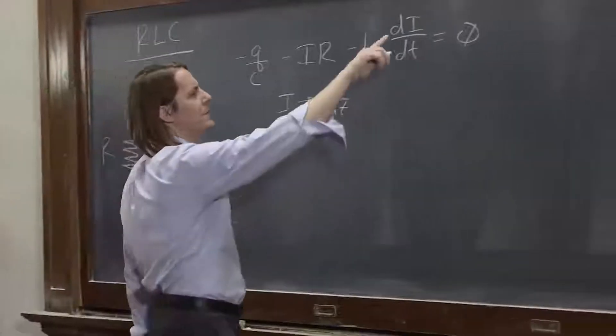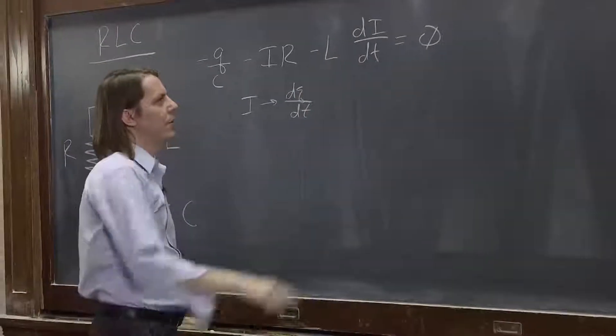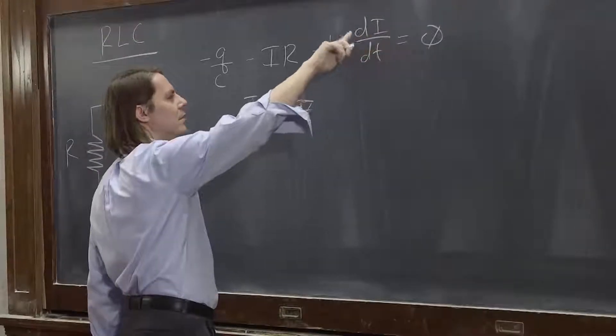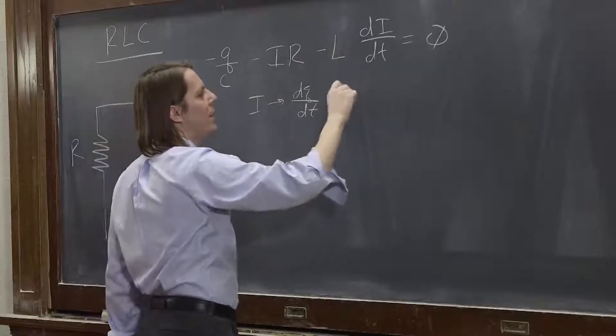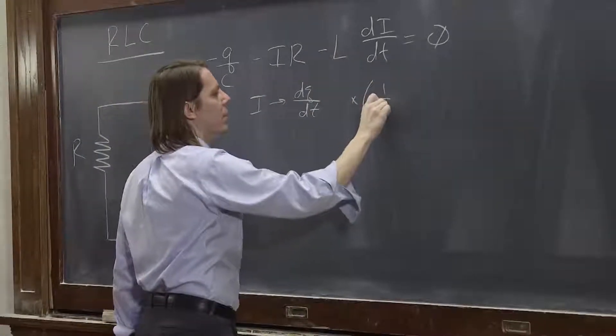So that was going to show up here. We have d²Q/dt² there, right? Because I is dQ/dt, and the derivative of a derivative is a second derivative. And we want to isolate it, so we want to multiply the whole thing by minus 1 over L.